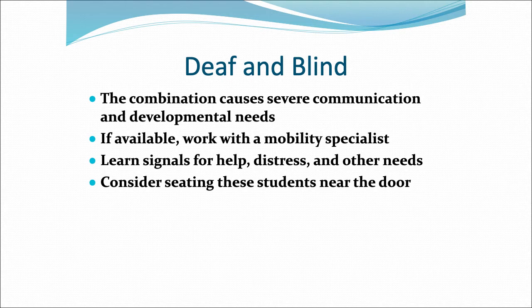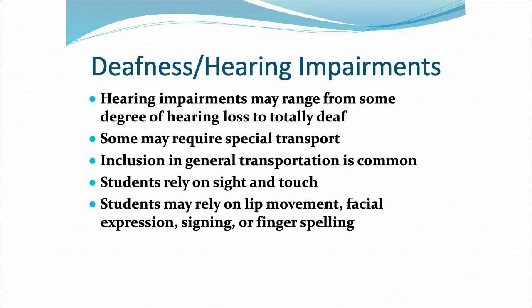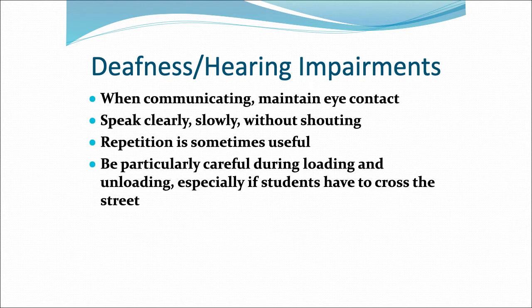Beyond autism, there are those who may be deaf and/or blind. A combination causes severe communications and developmental needs. Deafness and hearing impairments may range from some degree of hearing loss to being totally deaf. Students rely on sight and touch. When communicating with these students, always maintain eye contact, speak clearly and slowly without shouting. Repetition may be useful and necessary.